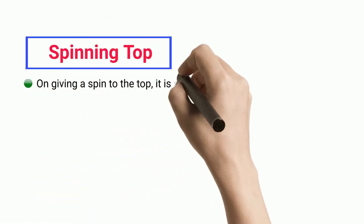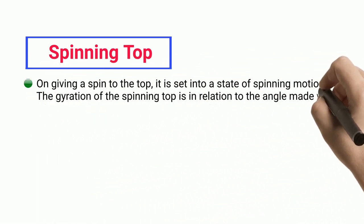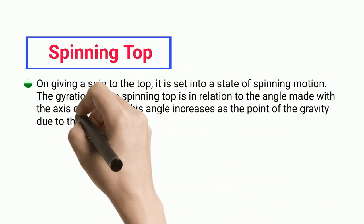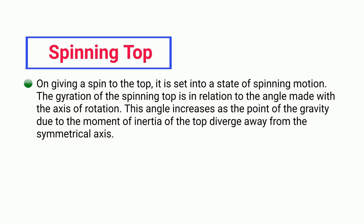Spinning top. On giving a spin to the top, it is set into a state of spinning motion. The gyration of the spinning top is in relation to the angle made with the axis of rotation. This angle increases as the point of the gravity due to the moment of inertia of the top diverges away from the symmetrical axis.